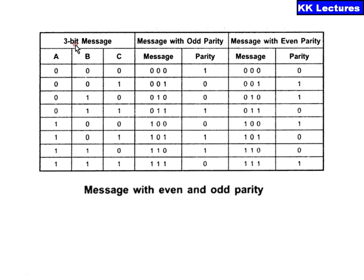Now here is a 3-bit message A, B, C. If you want to convert to odd parity — for example, 0 0 0: this has zero ones, which is even, so to make it odd parity I add a 1, making the total number of ones equal to one. Likewise, for 0 1 0, the total number of ones is already odd, so to maintain odd parity I add a zero. If I add a one it would become even parity.